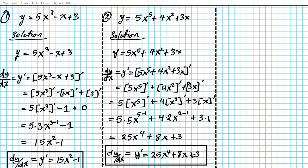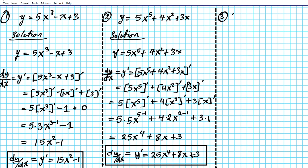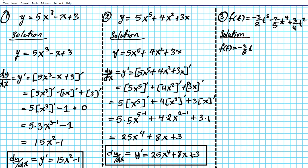Let's look at one more example involving a polynomial function with fractional coefficients. For number three, we have f(t) = -3/2·t⁵ - 2/5·t⁴ + 3/4·t². We want to find the derivative of this function with respect to t.